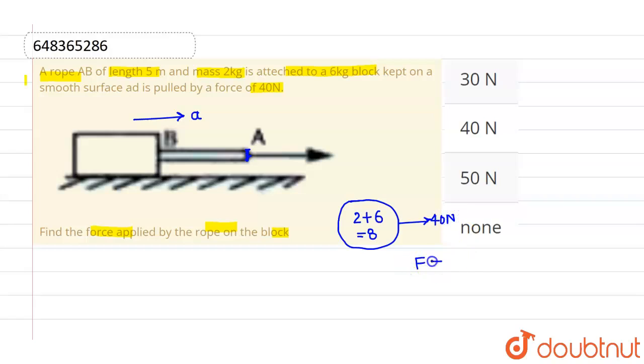The net force equals mass times acceleration. So acceleration equals force divided by mass. The total force is 40 newtons divided by mass 8 kg, which equals 5 meters per second squared. This is the acceleration of the system.